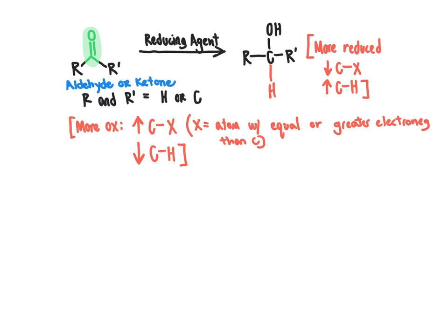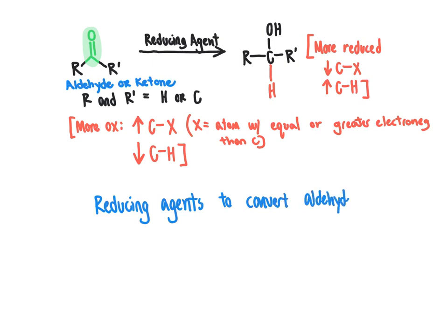So to reduce a carbonyl group to a hydroxy group for these aldehydes or ketones, what reagents can we use as our reducing agent to allow us to reduce the aldehyde or ketone group to an alcohol group? Let's look at reducing agents to convert aldehydes or ketones to alcohols.